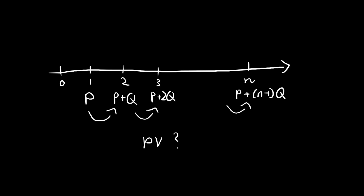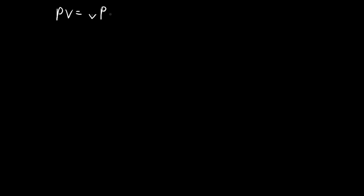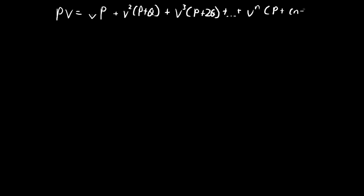The present value is equal to the sum of the present values of all the individual payments. So we have V·P plus V²·(P+Q) plus V³·(P+2Q), all the way to V^N·(P+(N-1)Q). The problem is how to simplify this expression.